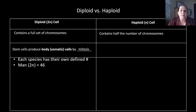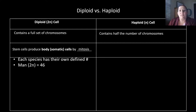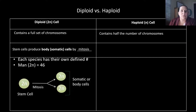Each species has its own defined N number. For us as humans, our 2N is 46 chromosomes — we got 23 from mom and 23 from dad to give us the full 46. This is where mitosis comes in: the cell starts with 2N, it divides, and each resultant cell also has 2N. They are identically the same as what they were before.